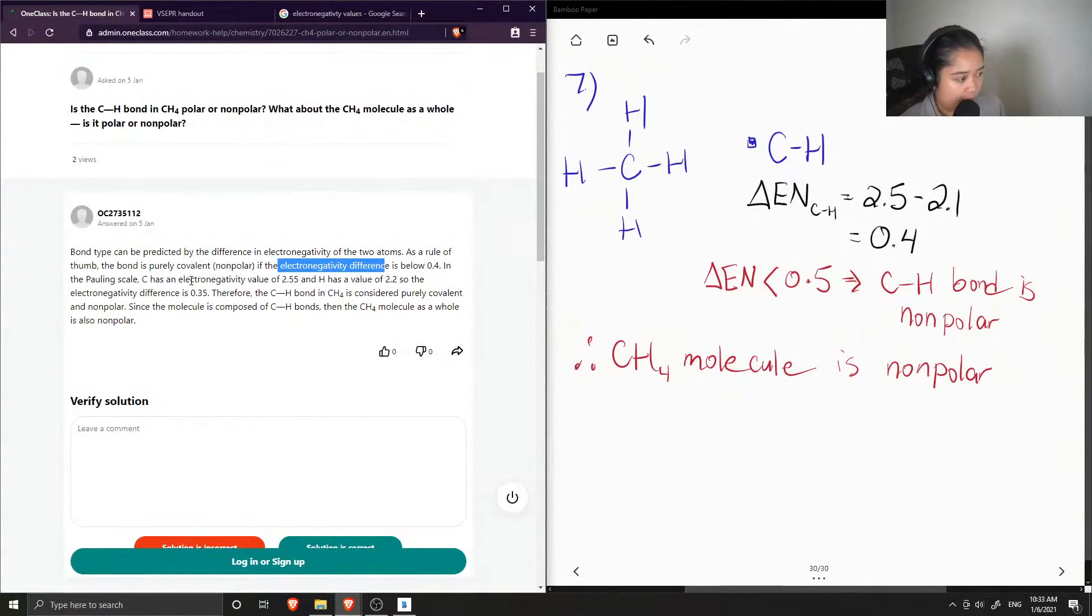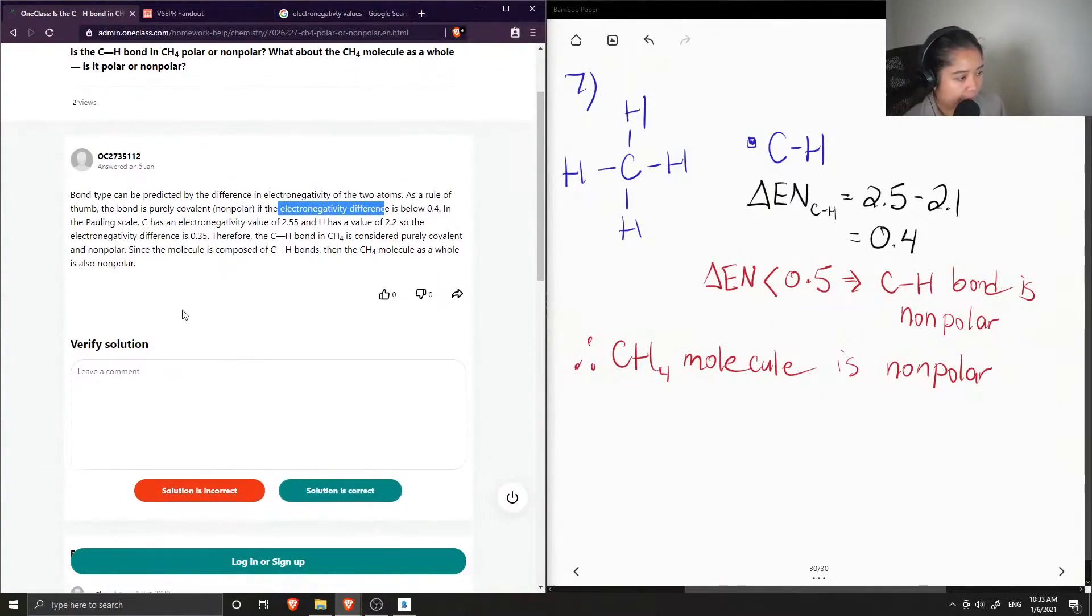So the electronegativity difference is 0.35. Therefore, the carbon-hydrogen bond is considered purely covalent and non-polar. Since the molecule is composed of carbon-hydrogen bonds, then the molecule as a whole is also not polar. Okay, so this solution is correct.